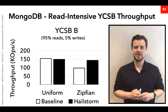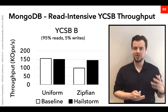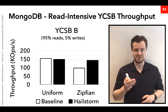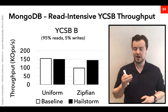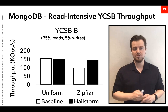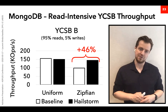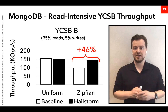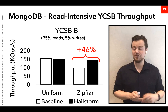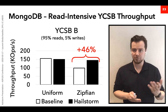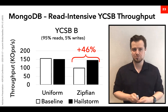For the read-intensive workload using YCSB-B (95% reads, 5% writes), the performance gains with Hailstorm are about 46% for the Zipfian case. These are lower than for the write-intensive workload because with only 5% writes, compaction offloading has fewer opportunities to help, and most of the gains come from storage pooling.